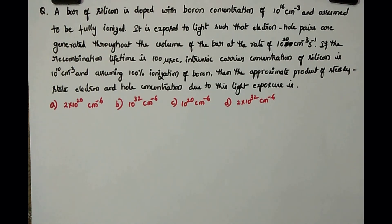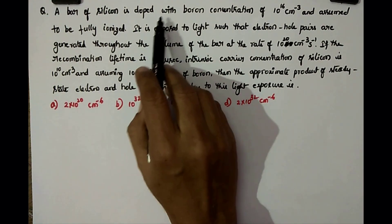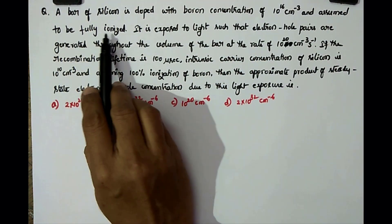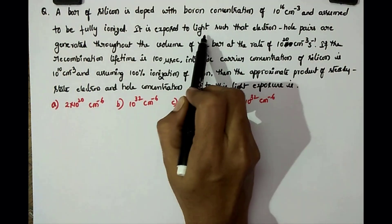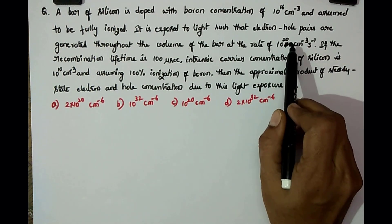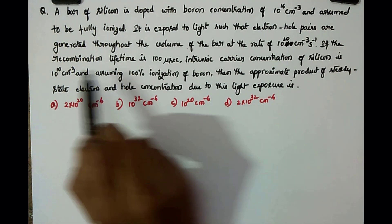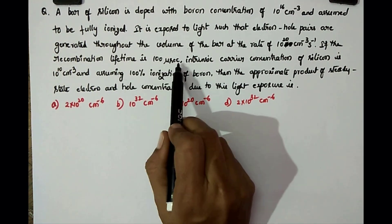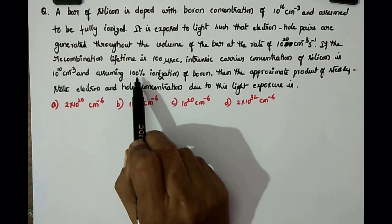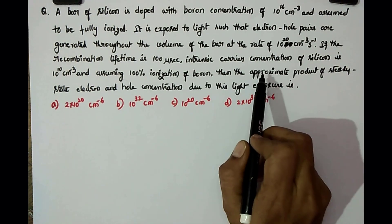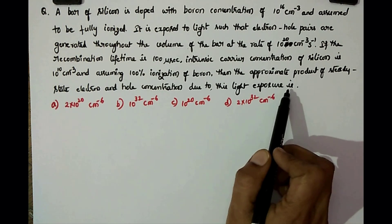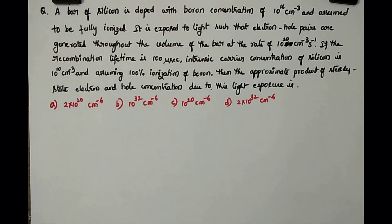Good day all. Today's GATE question: a bar of silicon is doped with boron concentration of 10 power 16 per centimeter cube, assumed to be fully ionized. It is exposed to light such that electron-hole pairs are generated throughout the volume of the bar at the rate of 10 power 20 per centimeter cube per second. If the recombination lifetime is 100 microseconds and the intrinsic carrier concentration of silicon is 10 power 10 per centimeter cube, assuming 100% ionization of boron, find the approximate product of steady-state electron and hole concentration due to this light exposure.